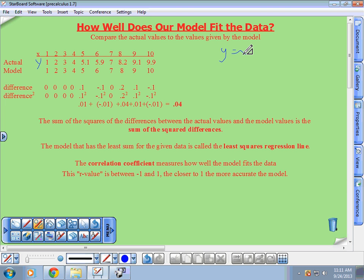Then I squared those. I took the square, I multiplied these by themselves. I squared them to get those numbers. These were the numbers when I squared them. And then I added those five together. And when I add them together, I got 0.04. The sum of the squares of the differences between the actual values and the model is called the sum of the squared differences. The model that has the least sum for the given data is called the least squares regression line. So in other words, our goal is we want this number to be as small as possible, which would mean that these numbers where they're off is as small as possible. So the best model would make this difference as small as possible.